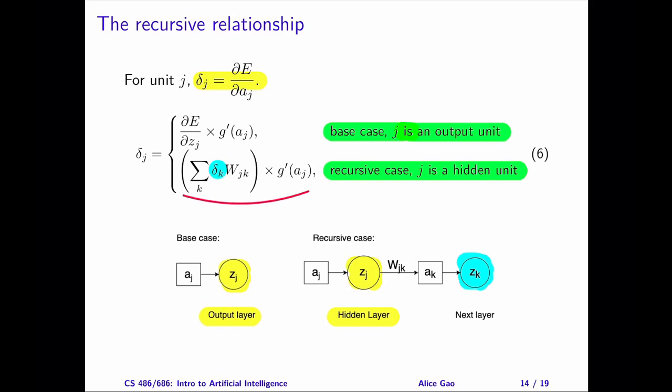Note that the expressions for the two cases are quite similar — in particular, the second terms are identical: they are both the derivative of the activation function g. Also, since our network only has one hidden layer, we only need to use the recursive case once. If a network has multiple hidden layers, we would need to apply the recursive case multiple times.